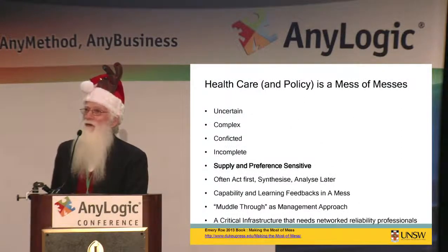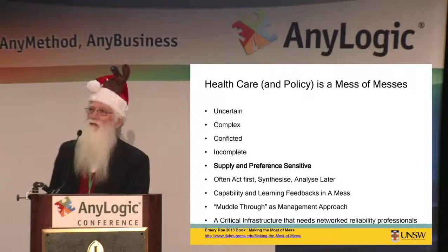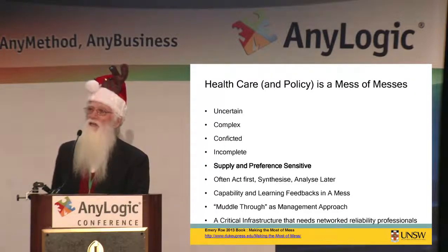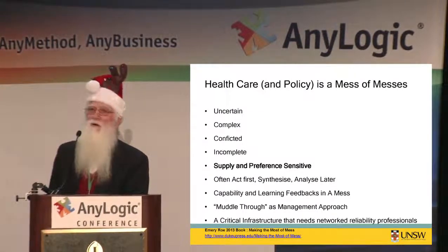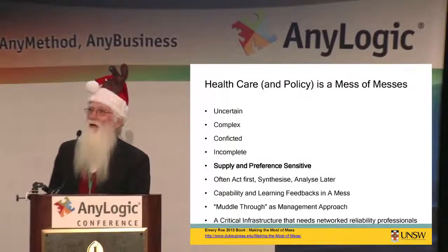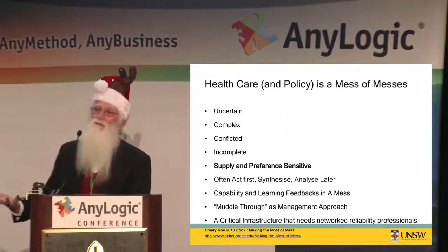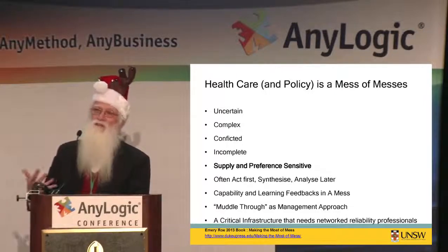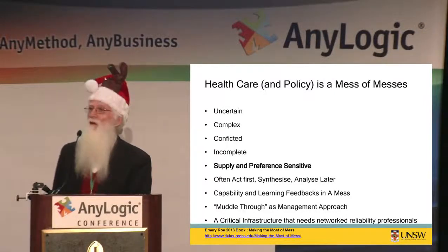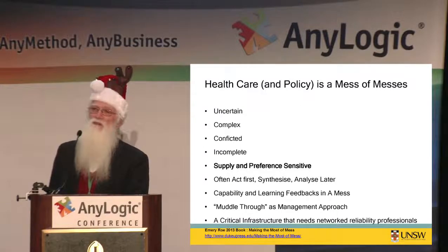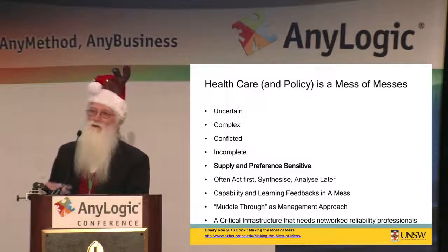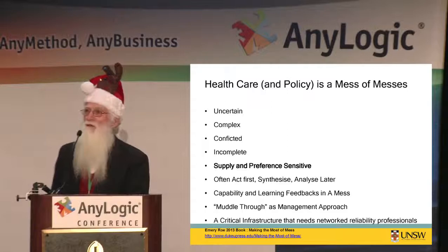Just a couple of concluding comments. Healthcare and policy is really a mess of messes — uncertain, complex, conflicted, and incomplete. Half the care is necessary, if only we knew which half. The supply is very supply- and preference-sensitive. Therefore, supply-induced demand is a key component. The preference sensitivity means we really have to look at serious individual preference behaviour with discrete choice experiments. We've got some models of doing that in any logic that we're happy to share.